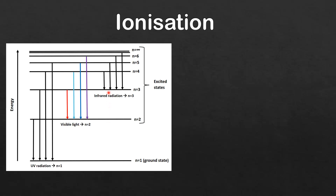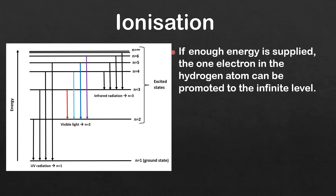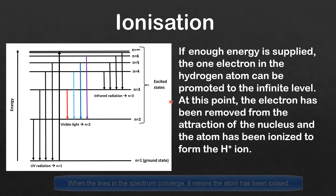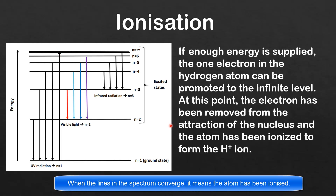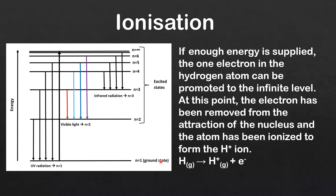If an electron absorbs energy it can transition to a higher energy level, but there comes a point where the energy absorbed is enough to remove it from the attraction of the nucleus, and the atom is said to be ionized. If enough energy is supplied, the one electron in the hydrogen atom can be promoted to the infinite level, transitioning from n equals 1 to n equals infinity. At this point the electron has been removed and the atom has been ionized to form the H⁺ ion.